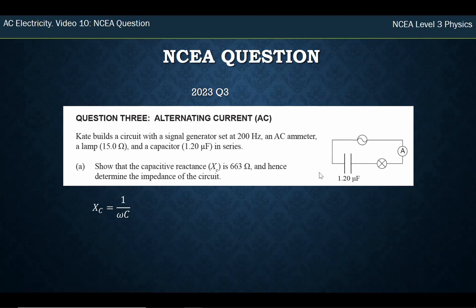I've got a formula for that, which is 1 over ωC. I've got C, which is 1.2 × 10 to the minus 6, but I don't have ω. Now ω is the angular frequency, so it's 2 times π times 200 Hz, and that gives me 1,256 radians per second. So now I can put that back in the formula.